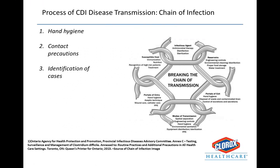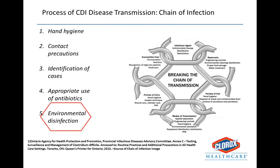Prompt identification of cases is a key step, as is appropriate use of antibiotics. Environmental disinfection is also important, and this is where I will spend most of the talk today, particularly focused on sporicidal agents as far as their role in reducing C. difficile. All of these interventions — numbered one through five — are part of a multimodal strategy. My focus will be on the fifth one: environmental disinfection, specifically the use of sporicidal agents.